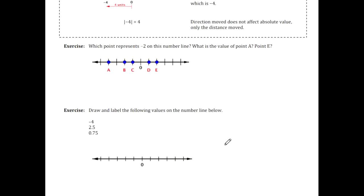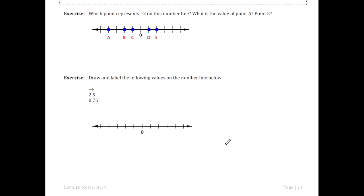A couple of exercises. Which point represents negative 2 on this number line? Starting at zero, we're going to go 2 units to the left because it's a negative number. Going 1, 2 units to the left, I get to B. So B is the point that represents negative 2. What's the value of point A? Point A is to the left of zero, so it'll be a negative number. Starting at zero and walking 1, 2, 3, 4 units to the left, we have negative 4 there.